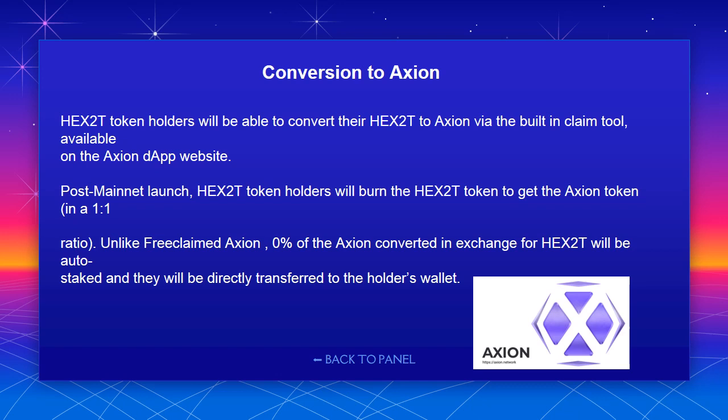Conversion to Axion: HEX 2T token holders will be able to convert their HEX 2T to Axion via the built-in claim tool available on the Axion DApp website. Post mainnet launch, HEX 2T token holders will burn the HEX 2T token to get the Axion token in a 1-to-1 ratio. Unlike free claimed Axion, 0% of the Axion converted in exchange for HEX 2T will be auto-staked — they will be directly transferred to the holder's wallet.